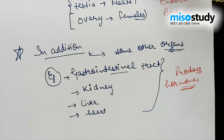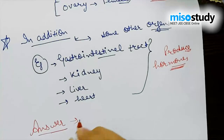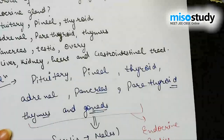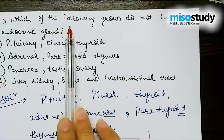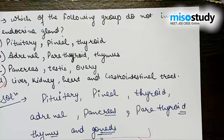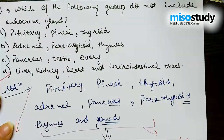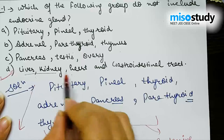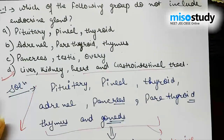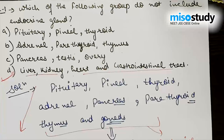According to this discussion, the right answer for this question is Option D — liver, kidney, heart and gastrointestinal tracts — because the question asks which group does not include endocrine glands. Although these organs produce hormones, they are not considered endocrine glands. That's all about question number one.